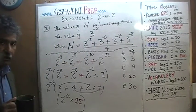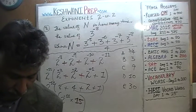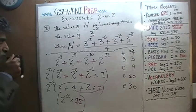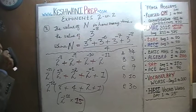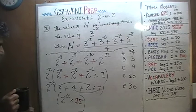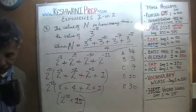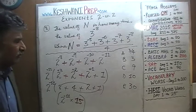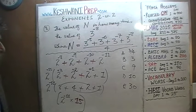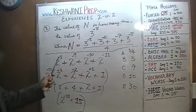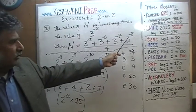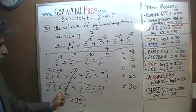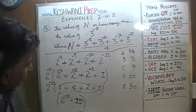As you can see, these problems are very similar. In problem 8, we took out 2 raised to negative 11 as a common factor. Here we are going to take out 3 raised to negative 8 as a common factor, so that we have whole numbers. Let's do it together.